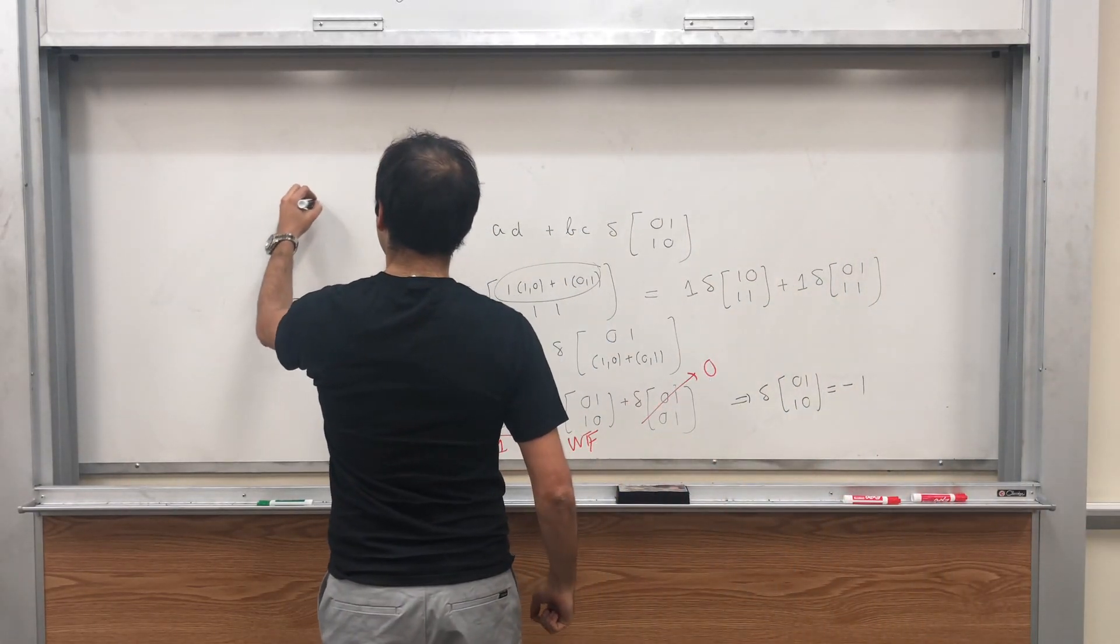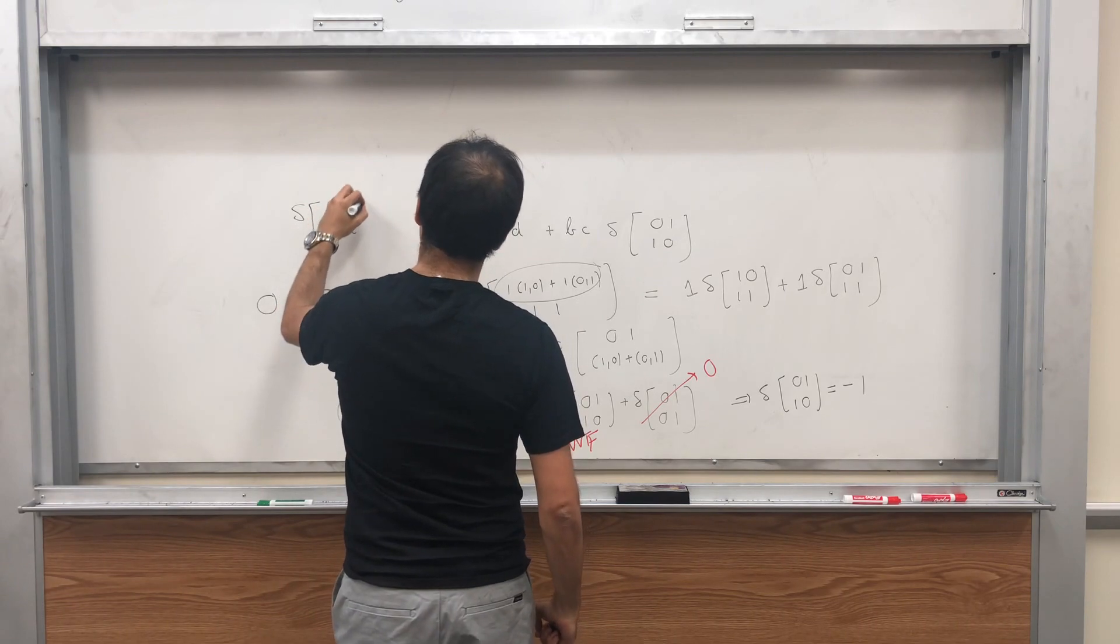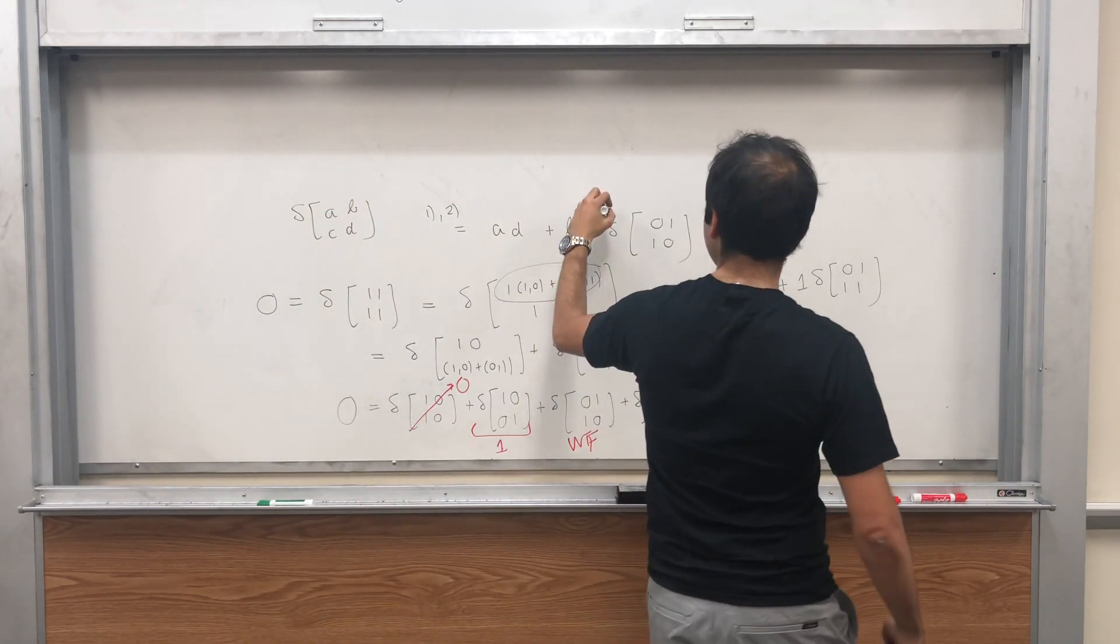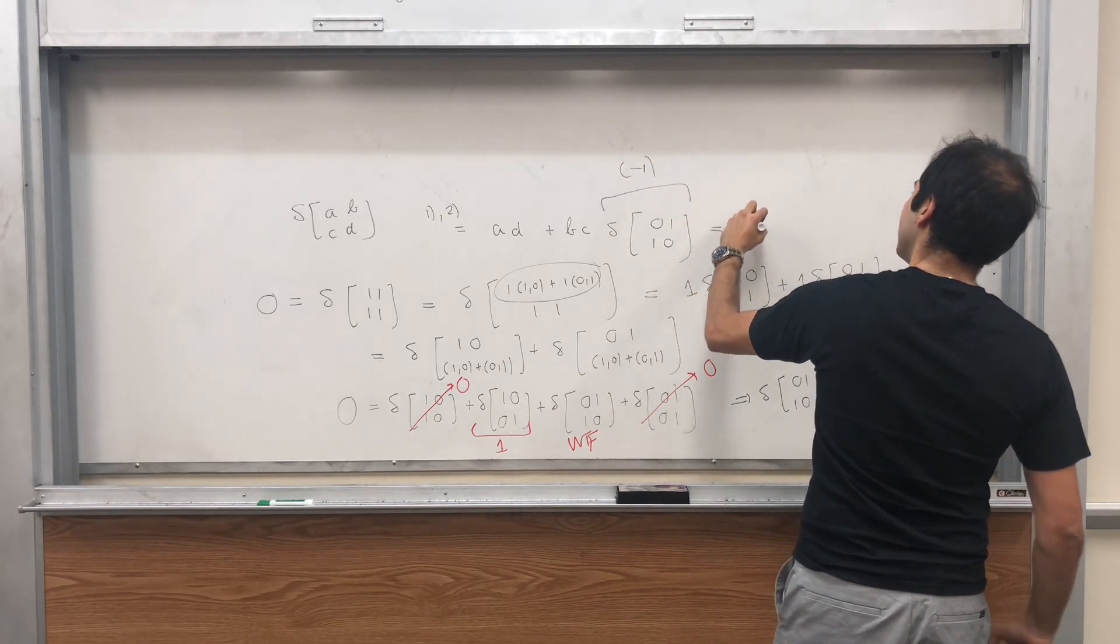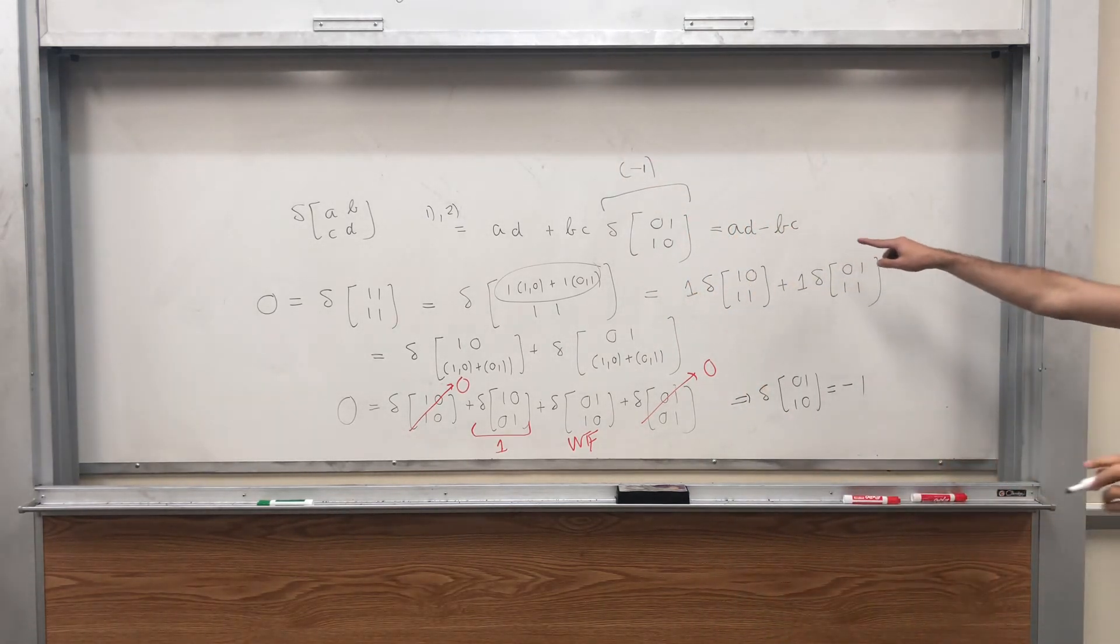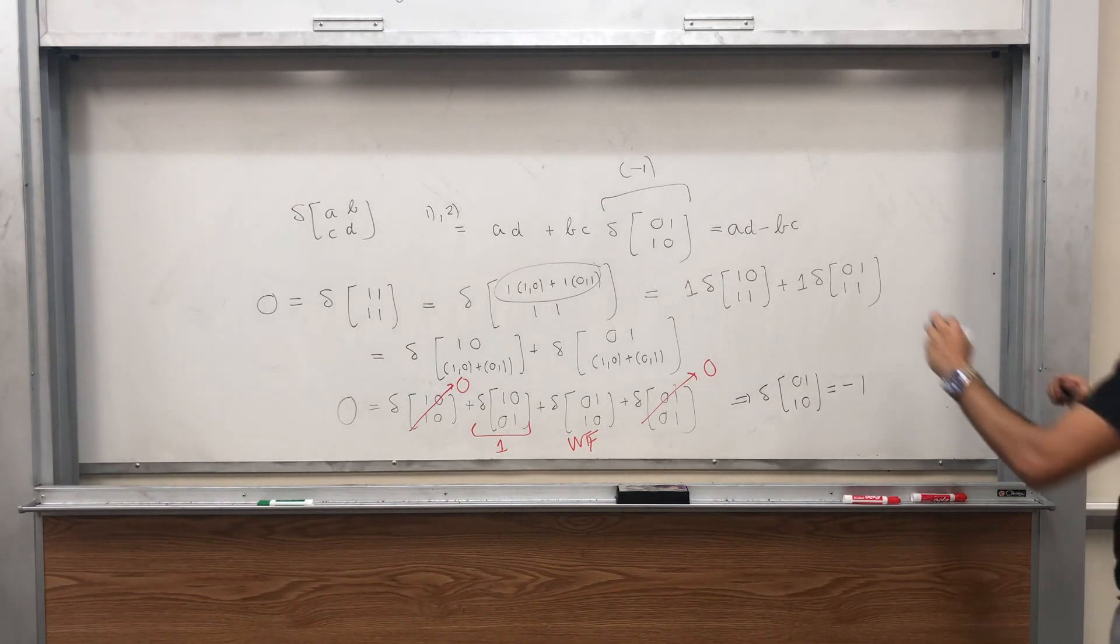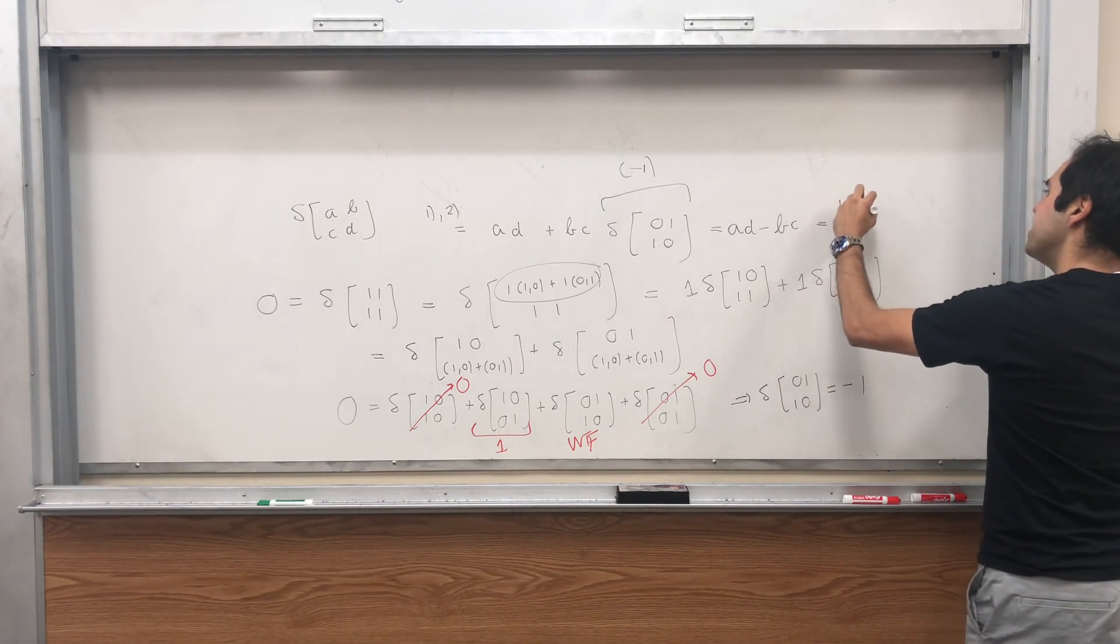Let's plug it in here. What do we want to find? Delta of ABCD. It's AD plus BC times this, which is minus 1. So it's AD minus BC. And what is that? It's precisely the determinant of ABCD.